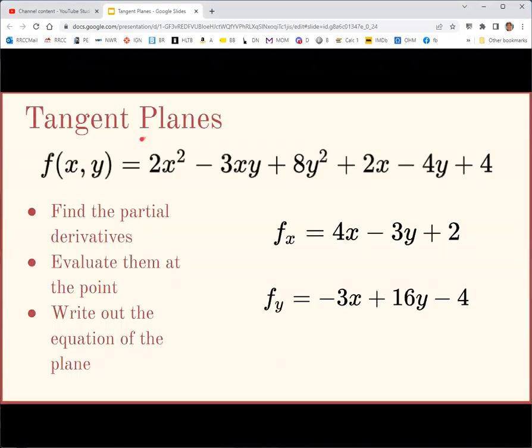Let's look at an example. F is a function of x and y equal to 2x squared minus 3xy plus 8y squared plus 2x minus 4y plus 4. First, we want to find the partial derivatives. The partial derivative with respect to x: 2x squared would give us 4x, negative 3xy would give us negative 3y. There's no x here, so the derivative is 0. 2x would give us 2.